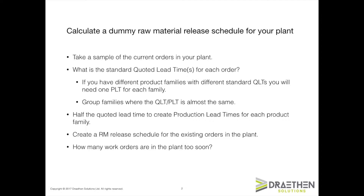Make a list on a spreadsheet with a row for each product family and columns for each QLT and PLT. Where the QLT is the same or almost the same for different product families, combine them into one group. For instance, if you had a product family with a 20-day QLT and another family with an 18-day QLT, the PLTs are 10 and 9 days respectively.